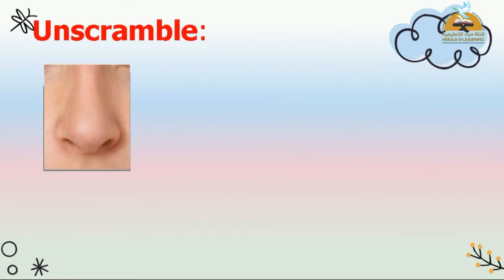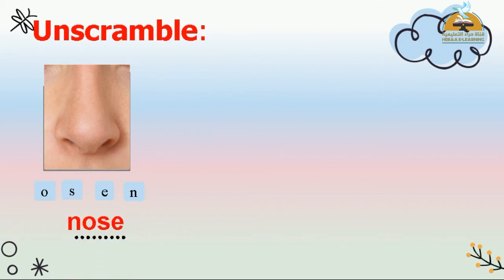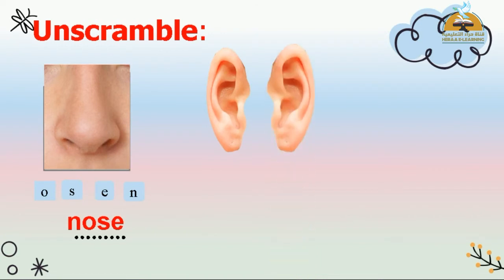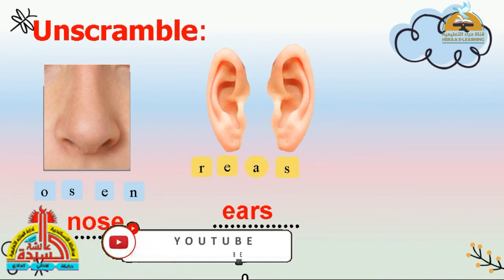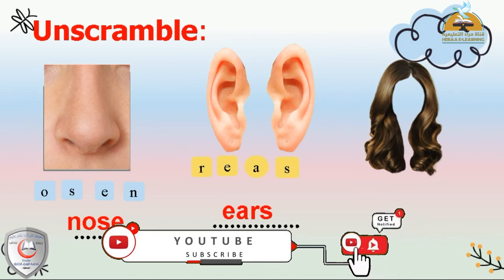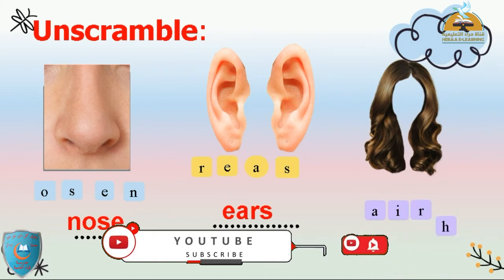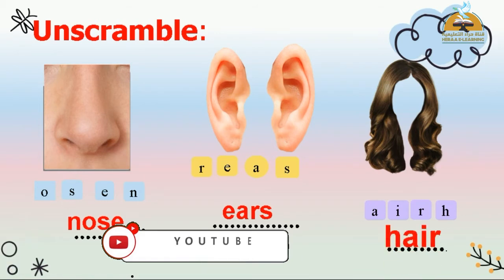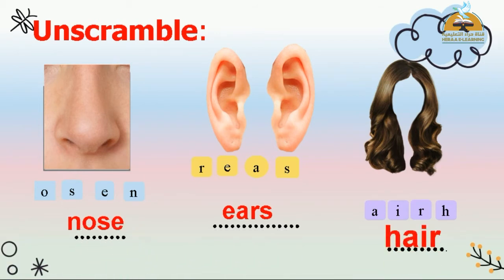Unscramble. What can you see? Nose. We start with N: N-O-S-E. Nose. What can you see? Ears. We start with the letter E: E-A-R-S. Ears. What can you see? Hair. We start with the letter H: H-E-I-R. Hair.